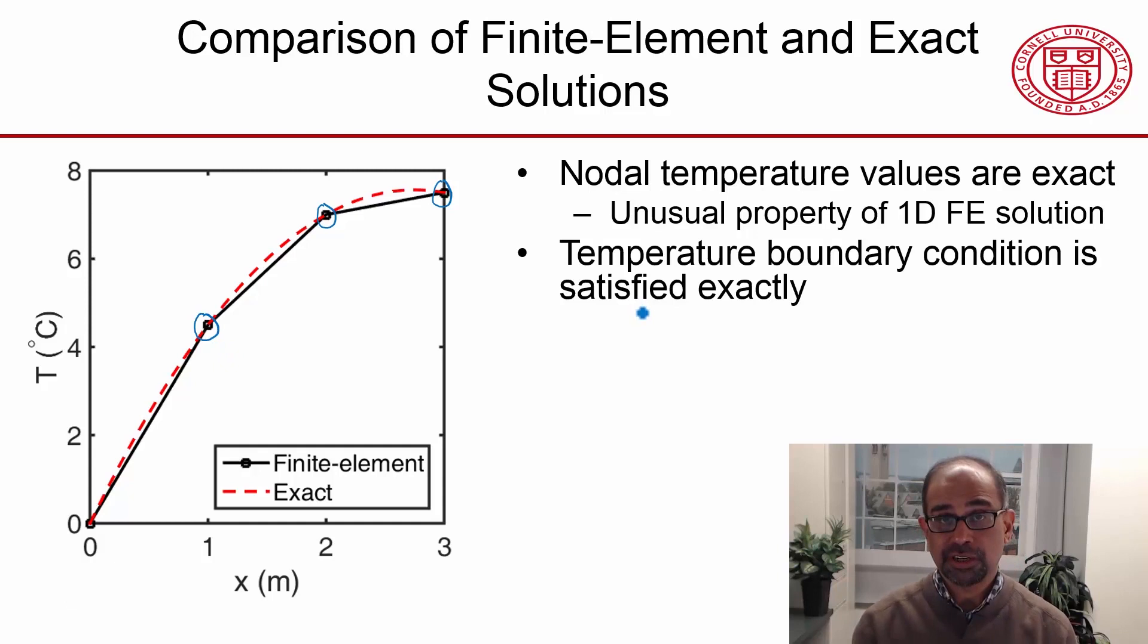The temperature boundary condition is satisfied exactly. What I did was I assigned values for the temperature and the flux boundary condition, the length of the bar, the thermal conductivity, et cetera. I just picked that the left boundary is at zero degrees, and you see that matches exactly, because I assigned that boundary condition to that value. That's what you do with essential boundary conditions, and you can see that's satisfied exactly.